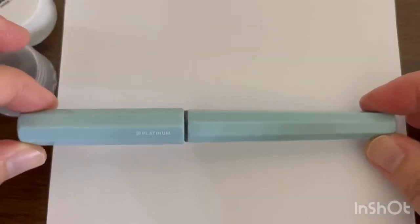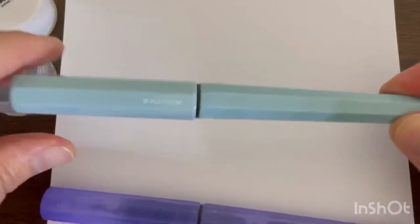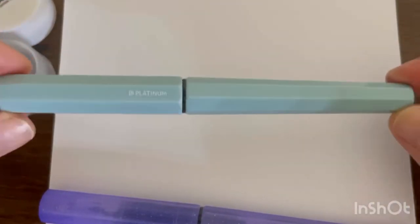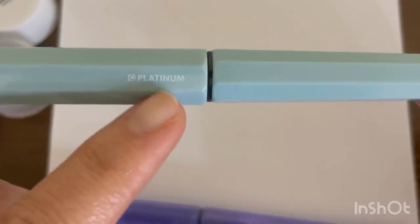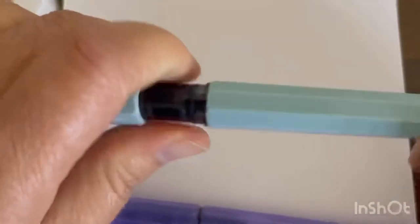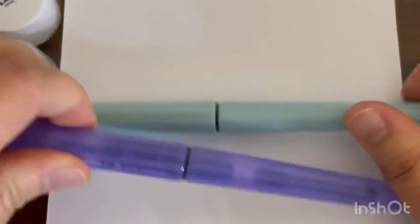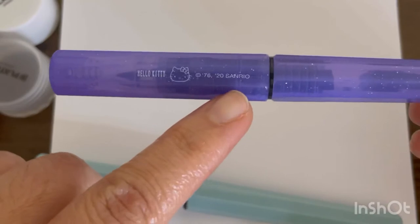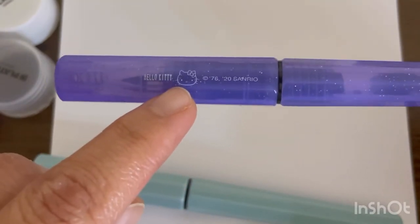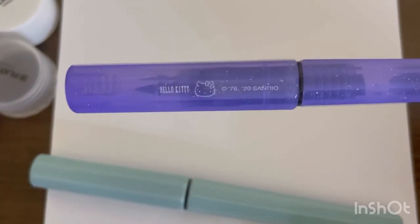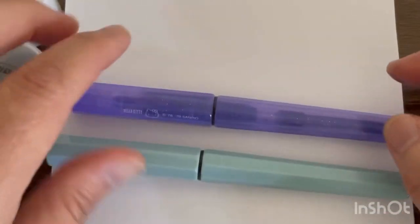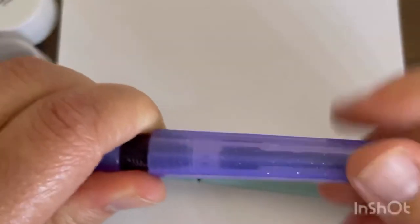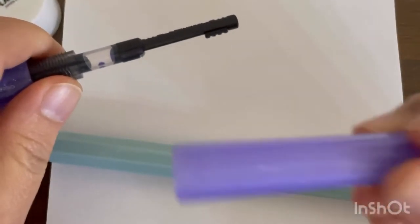The regular one is not anything special or fancy at all - it has that Platinum logo in there. This one is translucent. This is their Sanrio collection and I specifically picked up Hello Kitty because I like Hello Kitty. The barrel itself is again made of plastic, nothing really fancy.